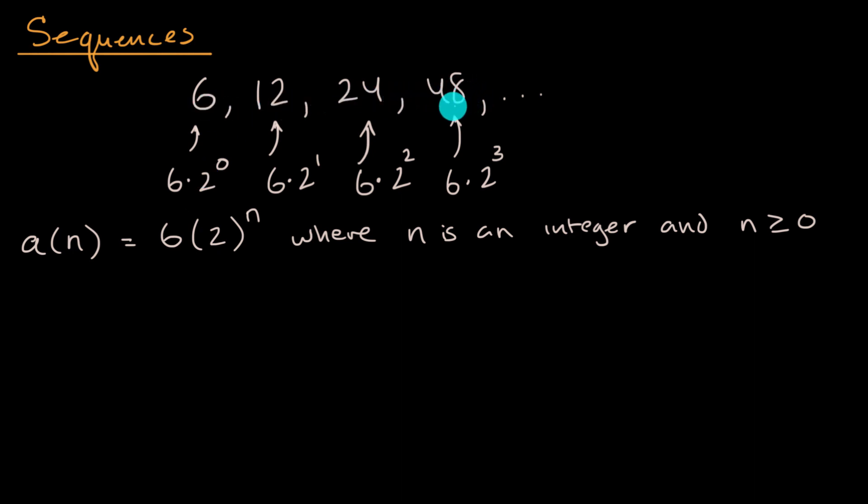But as we'll see, there are other ways to do it. For example, let me do another one in another color. Let's say I have b of n. And let's say I want to, instead of making, instead of saying I'm going to start at n equals zero, and you could kind of view this as a zeroth term, I want to start at n equals one.